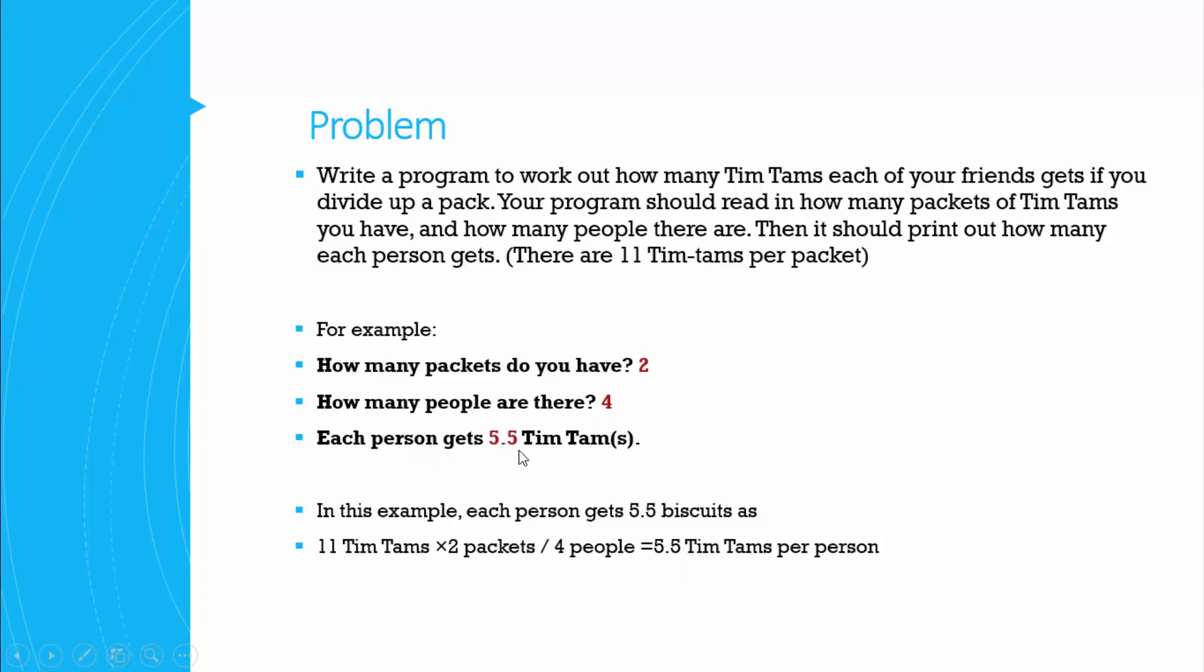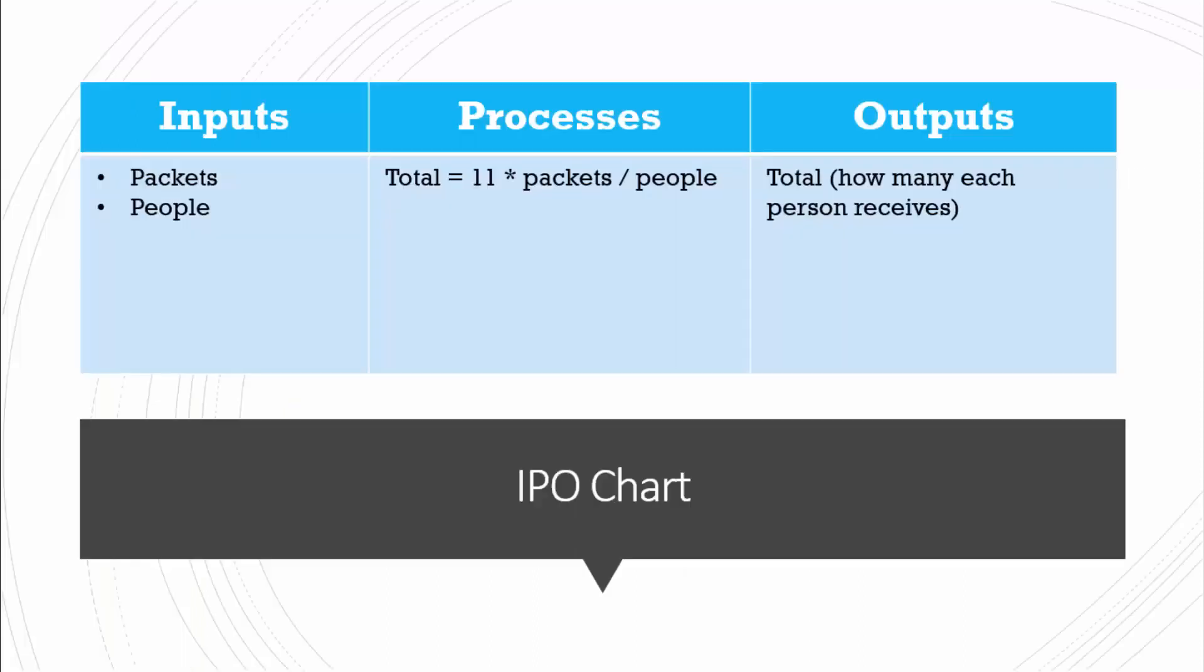So we start off with our IPO chart. Now our IPO chart will list all of our inputs, outputs, and processes. The inputs, the things that we need for this program to work, we need to know the number of people there are and we need to know how many packets you have as well.